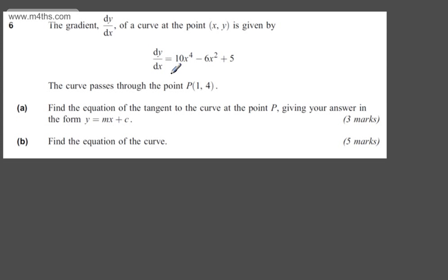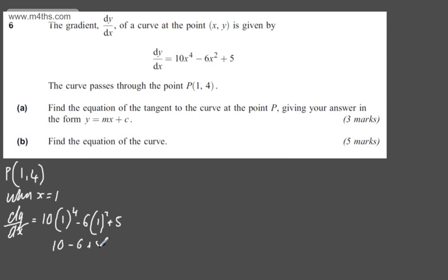We can get the gradient by using the gradient function when x equals 1. So point P has coordinates (1, 4). When x = 1, dy/dx will be 10(1)^4 - 6(1)^2 + 5. So we have 10 - 6 + 5, which gives us 9.